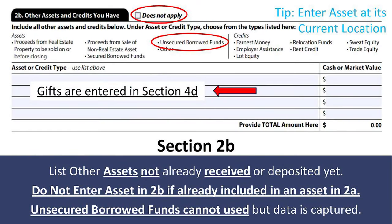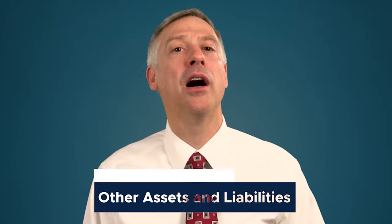If a gift or grant has already been received and deposited into the bank account, list it in Section 2a. If not yet received, list it in Section 4d. All gifts, whether deposited or not, are listed elsewhere on the loan application — do not list a gift as an asset in Section 2a. Most assets need to be sourced and seasoned — meaning sitting in a bank account for at least 60 days. There are exceptions for gifts and certain other types, covered in another chapter.